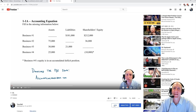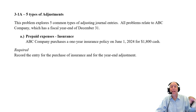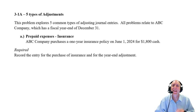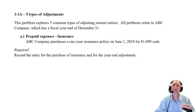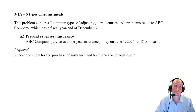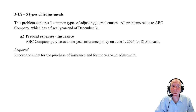Let's jump into the problem. Let's take a look at problem 3.1a. This has us exploring five different kinds of adjustments or adjusting journal entries. The first kind we're going to explore is prepaids.